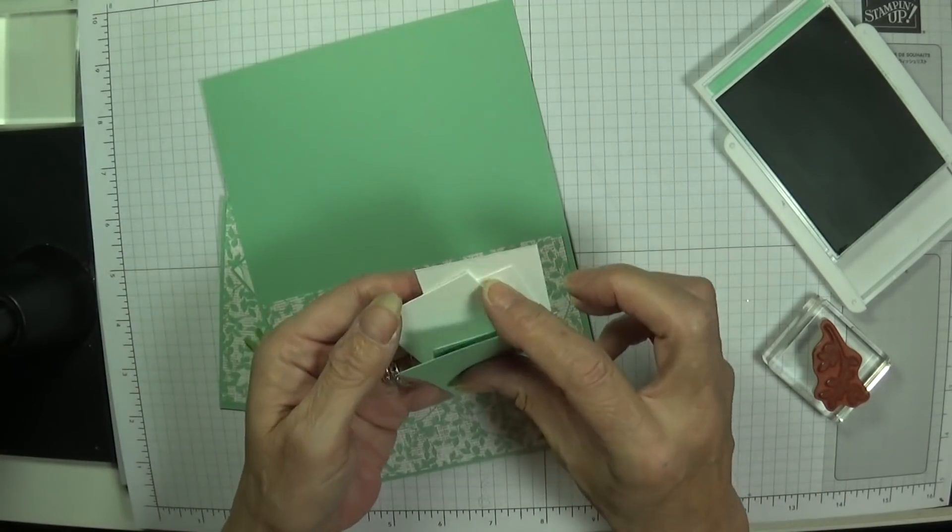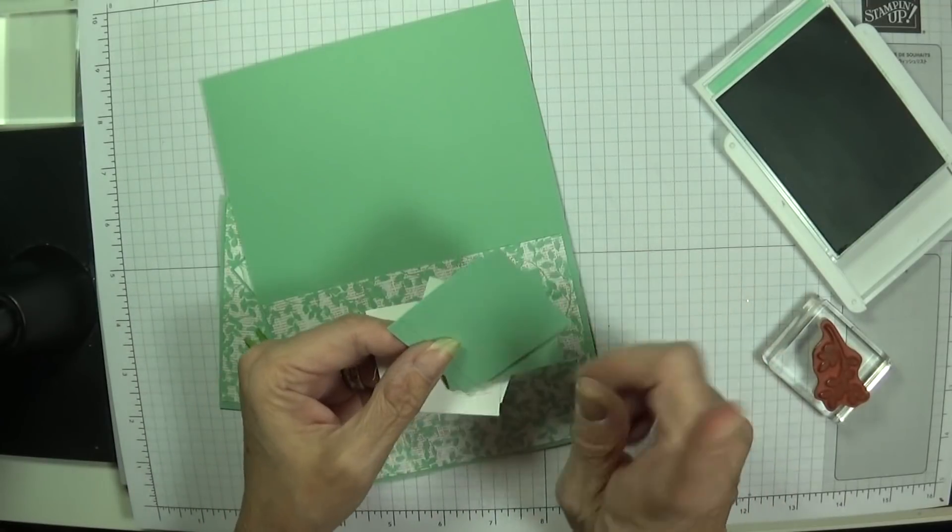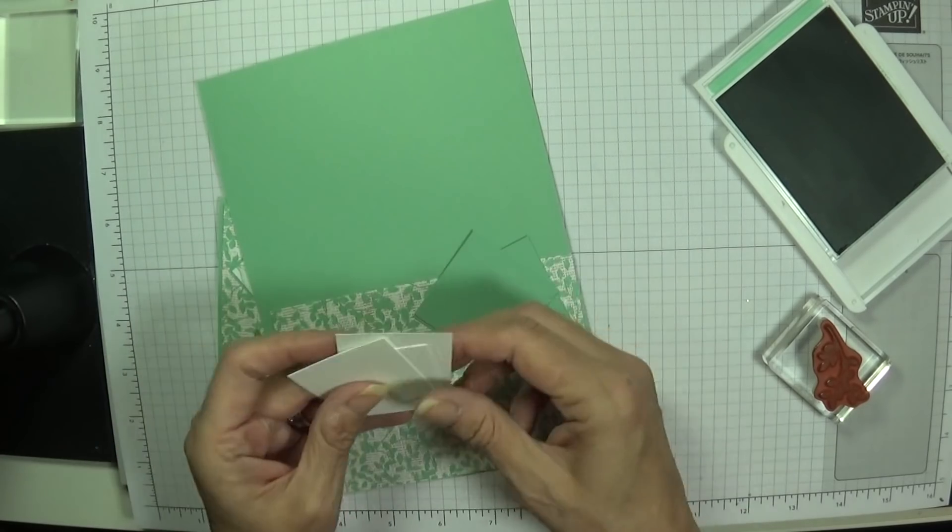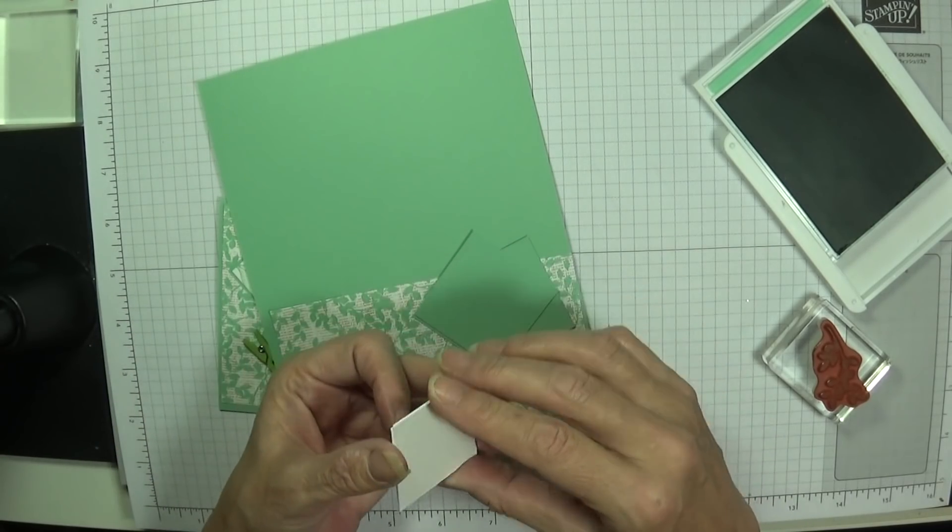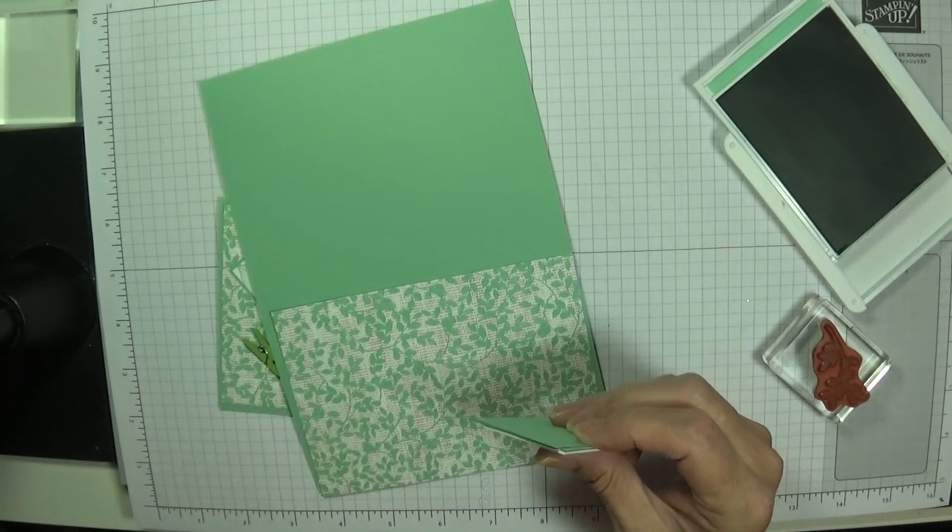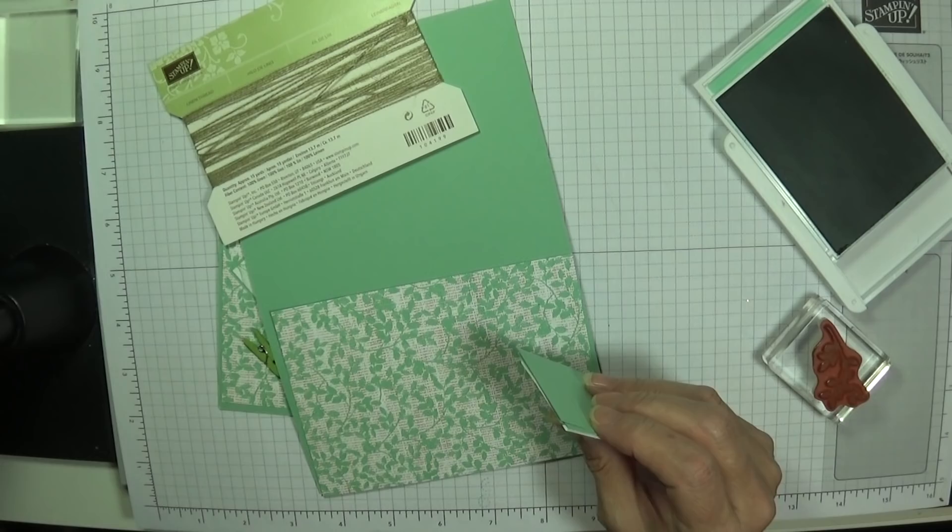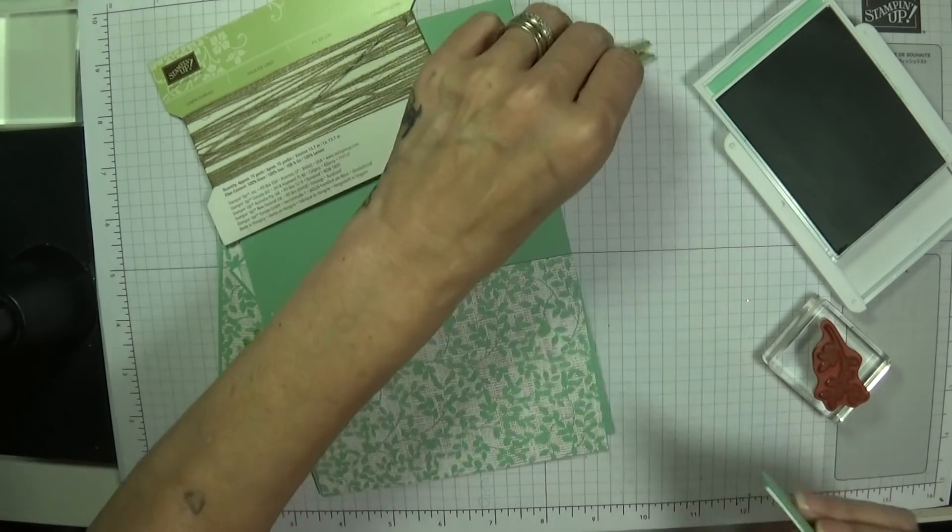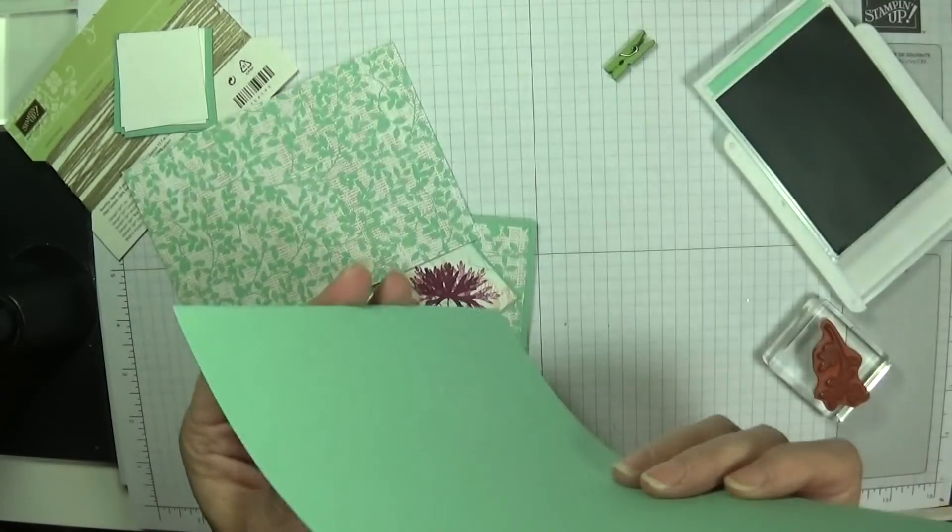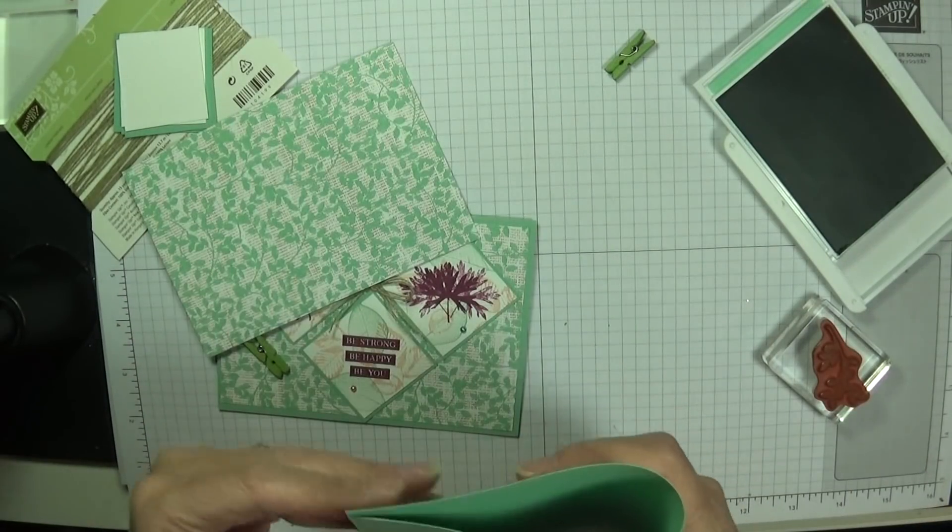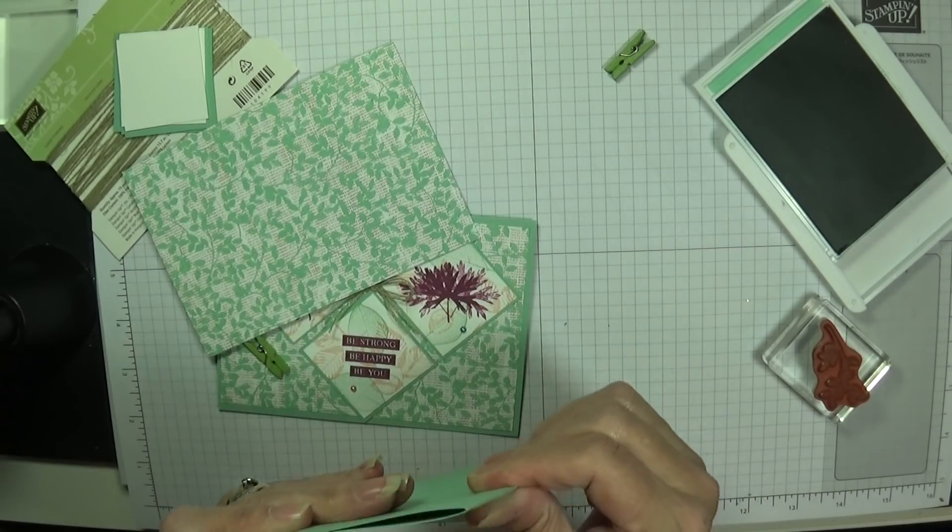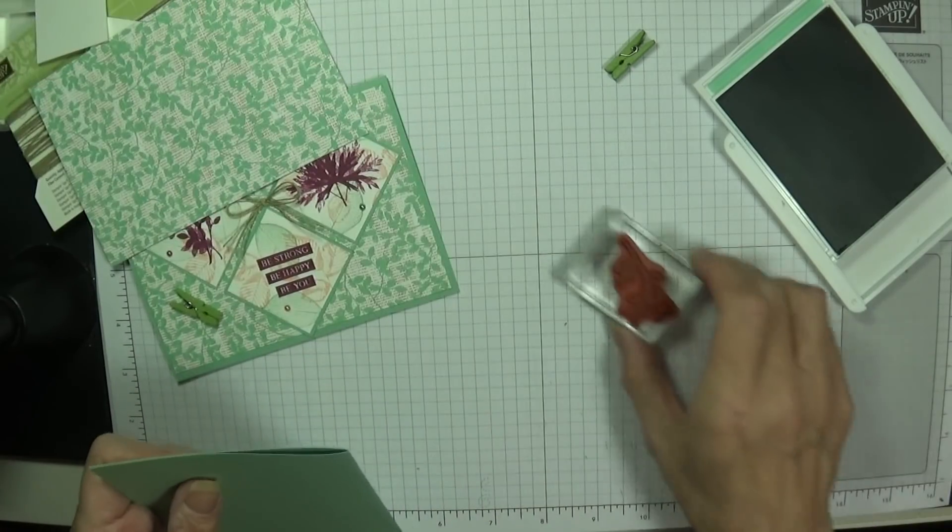So I've got three pieces of mint macaron. These are 1 and seven eighths by 1 and seven eighths, and these are 1 and three quarters by 1 and three quarters. I've got my linen thread and I've got my little green peg ready to go on there as well. These are just bonus cards for everybody because I still do my nightly premiere with you all.